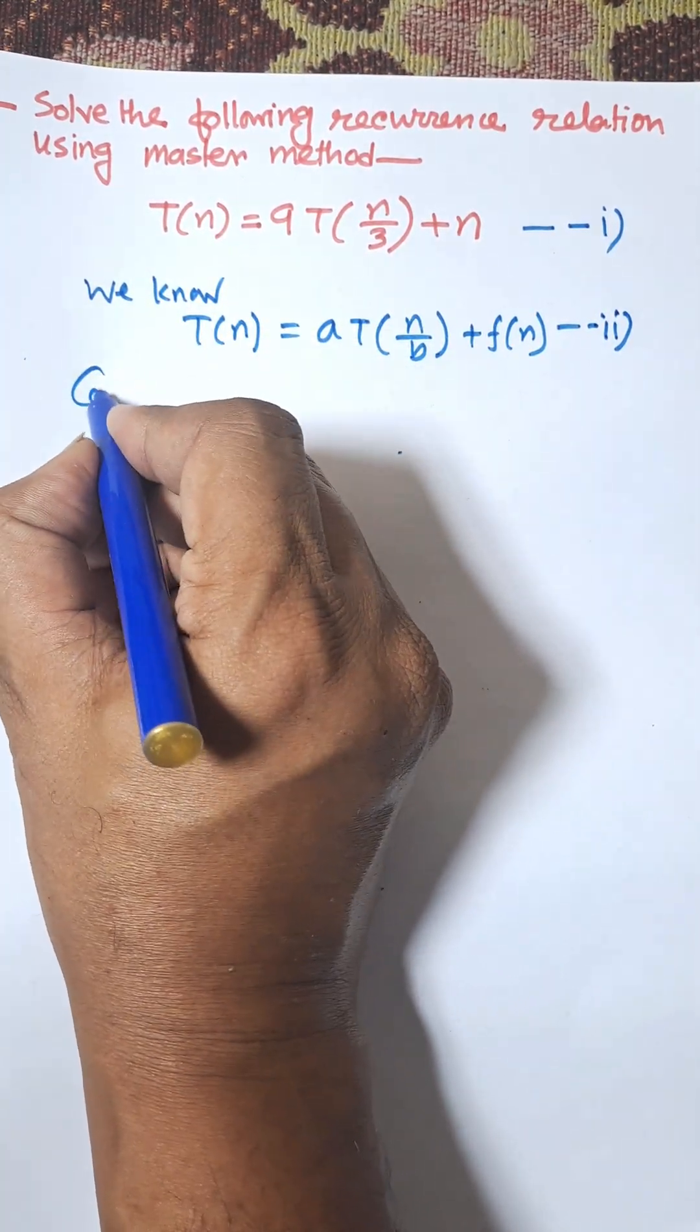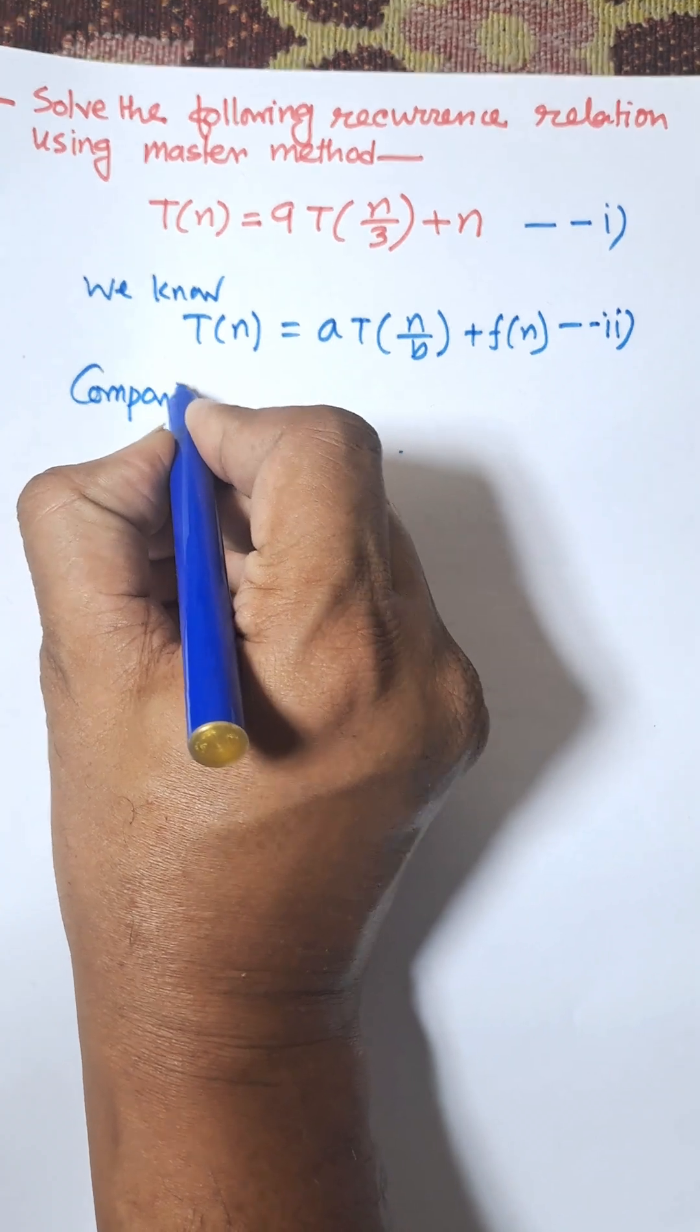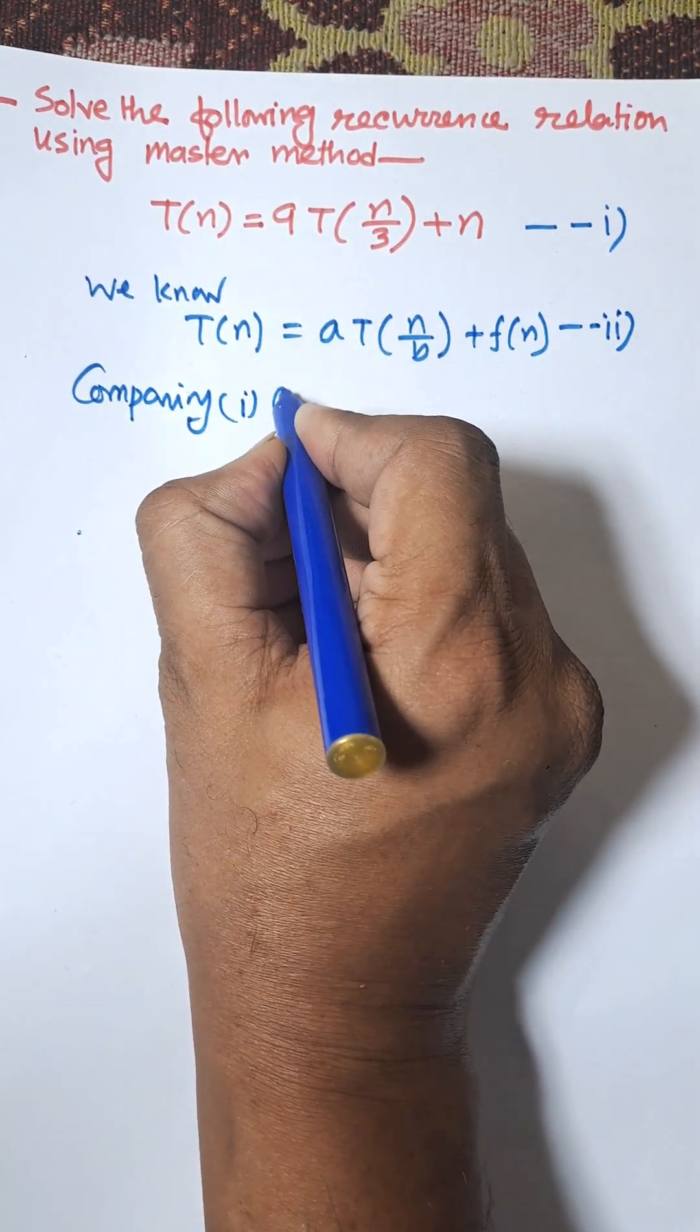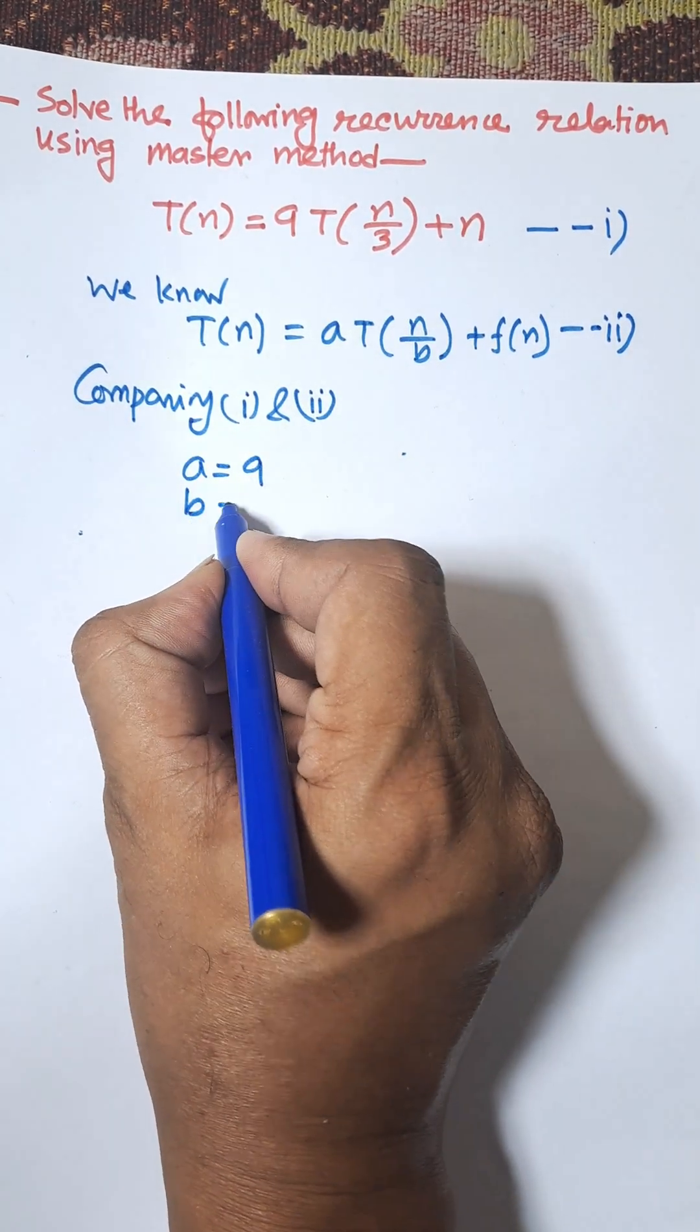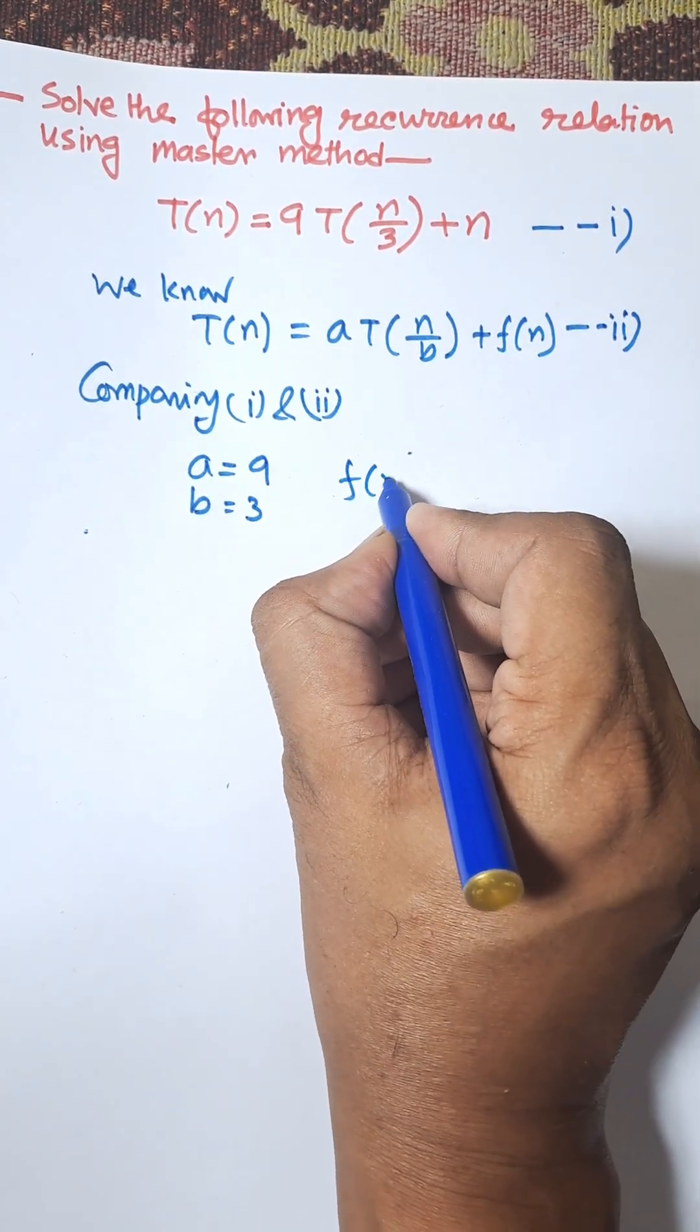Now comparing one and two, comparing one and two, a equals 9 and b is 3. Here f(n) equals n.